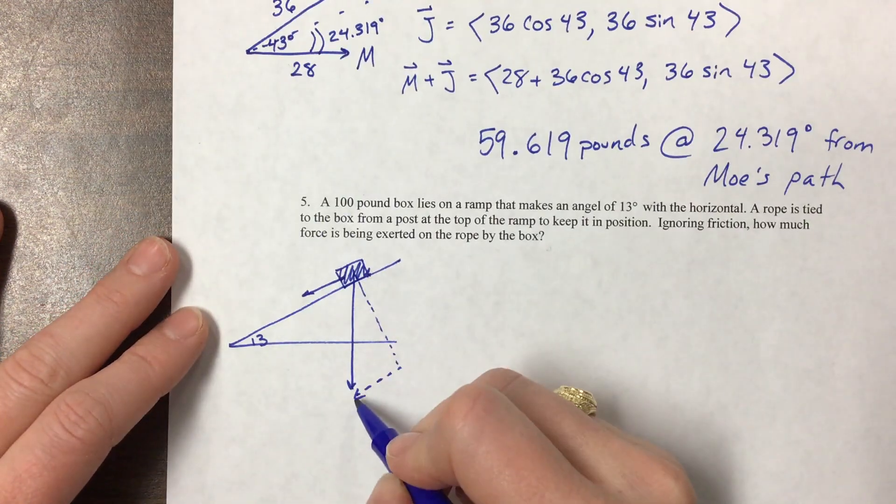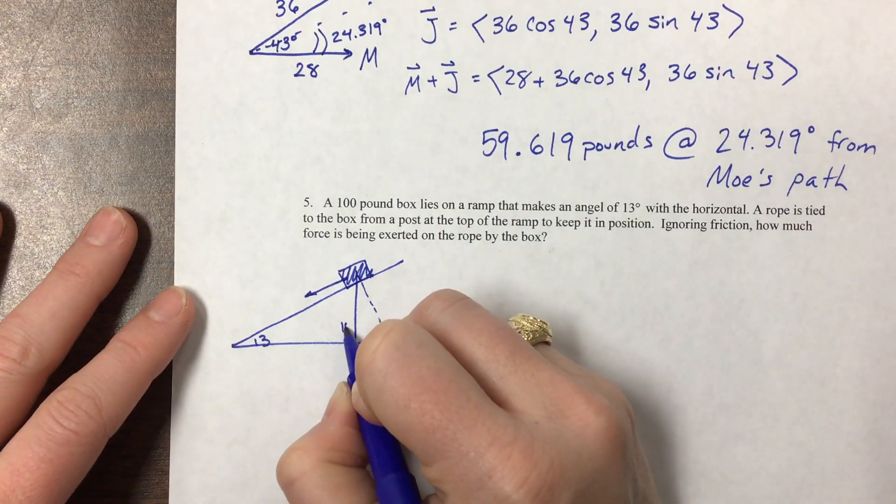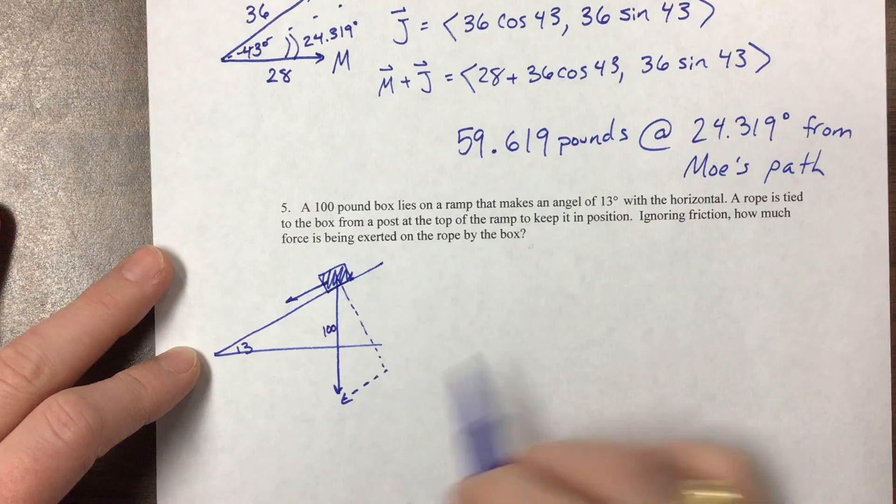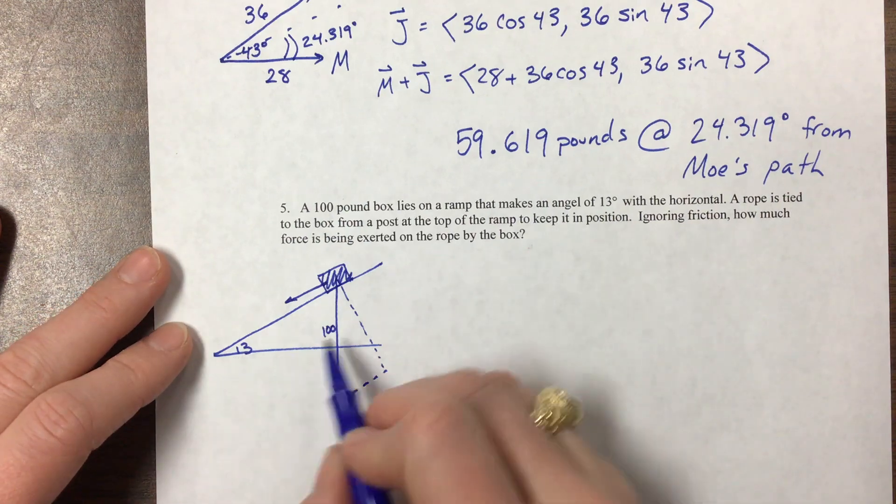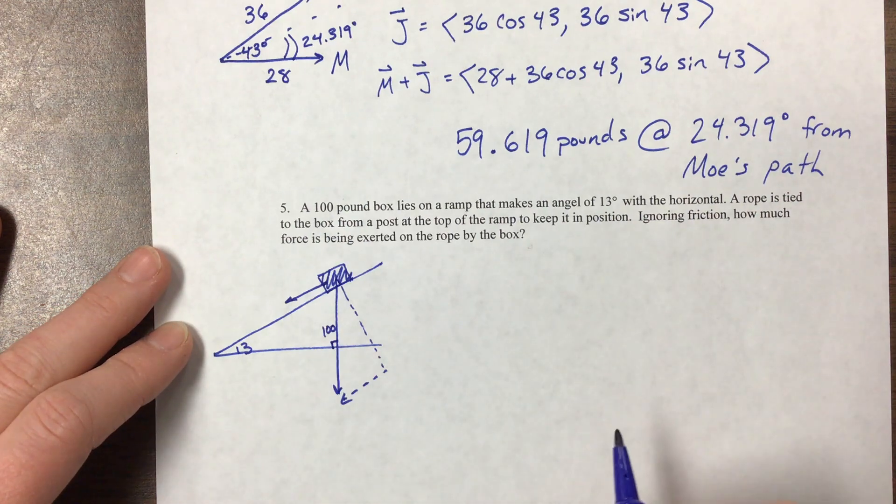So this force pulling it straight down is a hundred pounds and this angle is 13. Well, so here we have this lovely little right triangle.